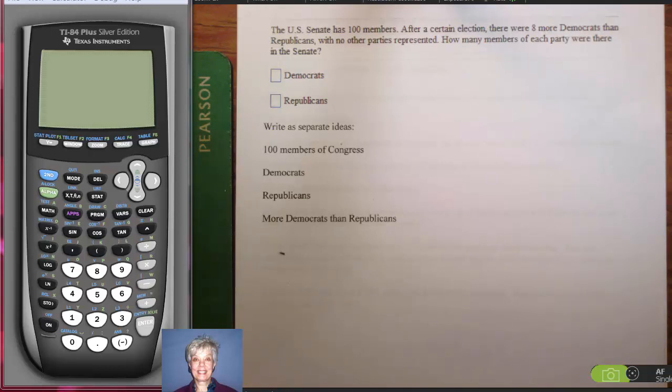The U.S. Senate has 100 members. After a certain election, there are 8 more Democrats than Republicans, with no other parties represented. How many members of each party were there in the Senate?